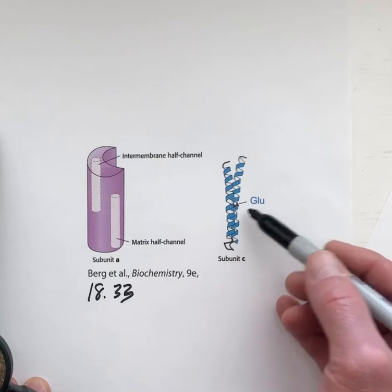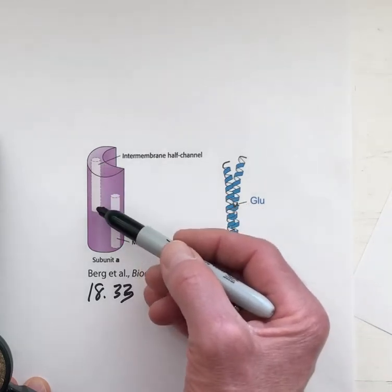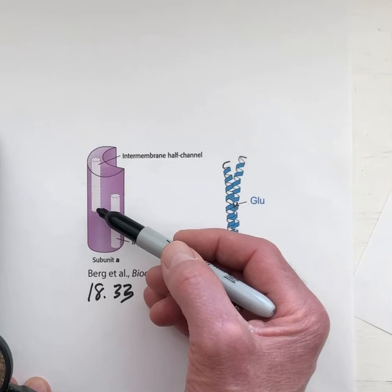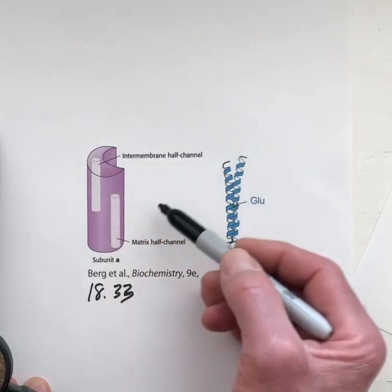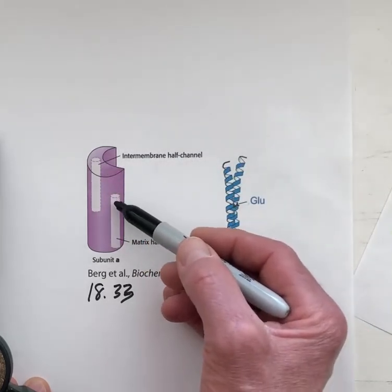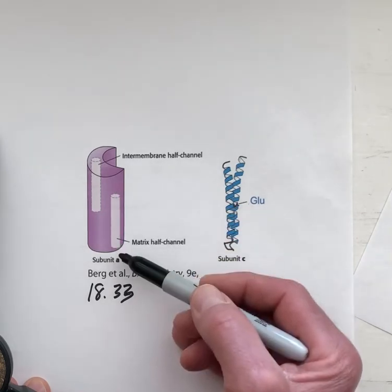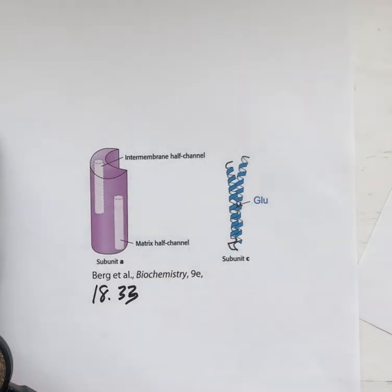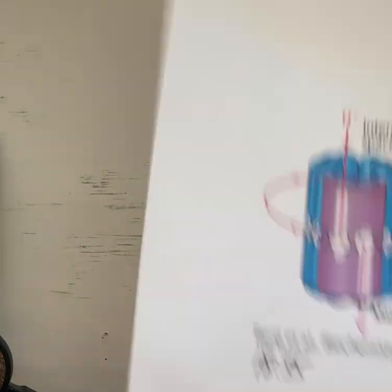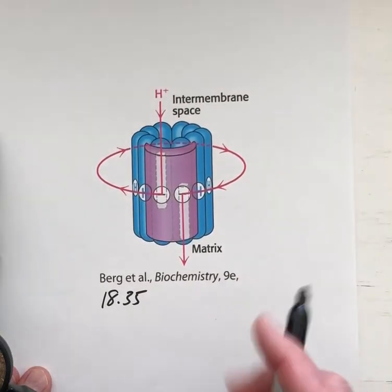That glutamate is able to pick up protons from this inner membrane half channel, and then after rotating all the way around, it deposits that proton to this other half channel that's pointed towards the matrix. That path is illustrated here in figure 18.35.